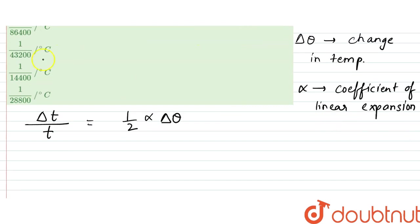So from here, we can say that delta t equals half times alpha times delta theta.